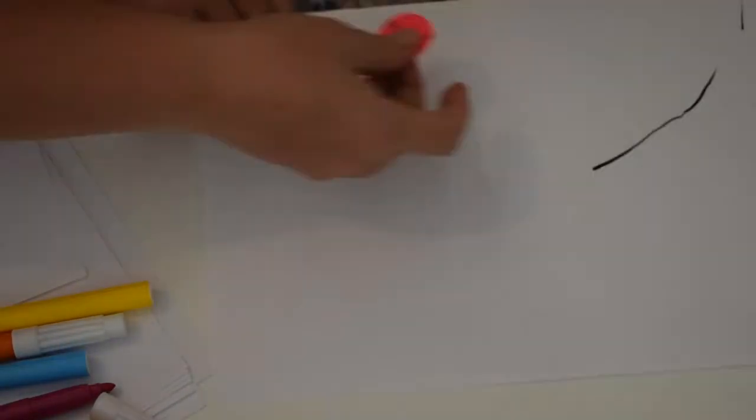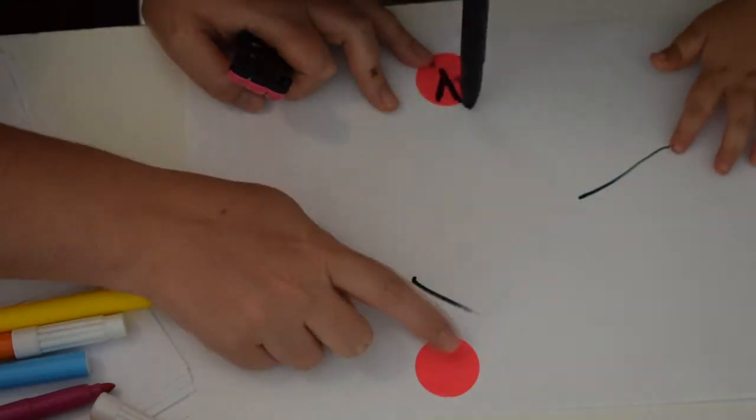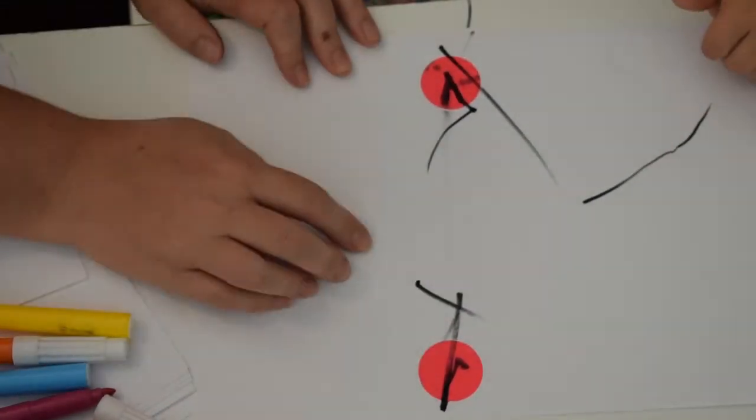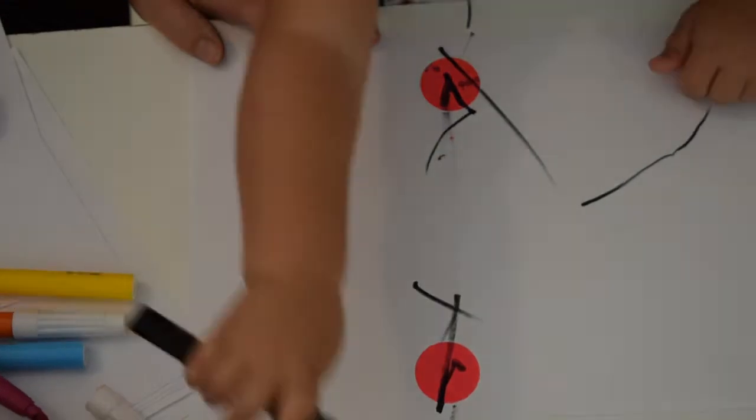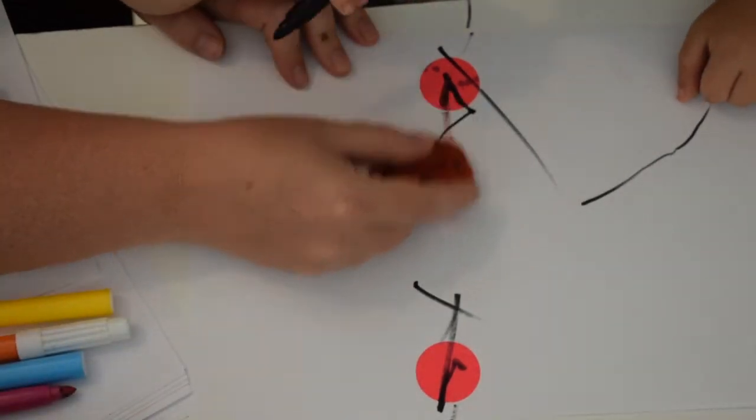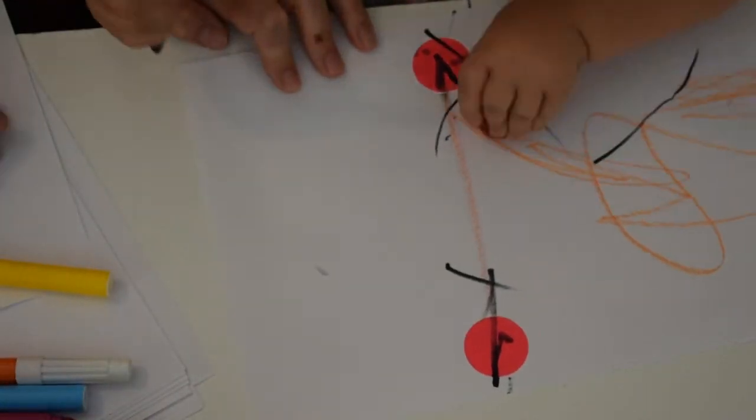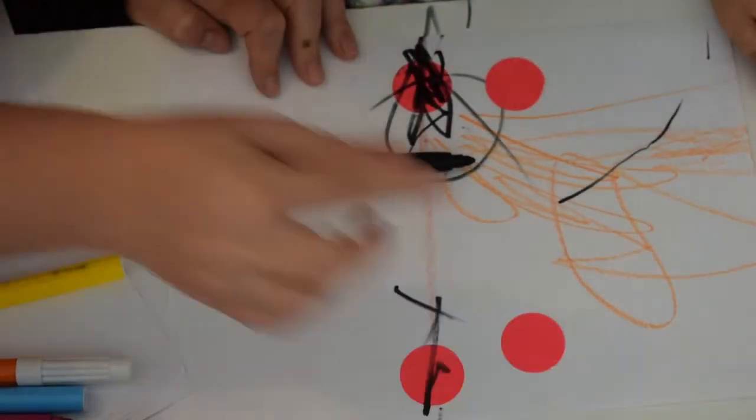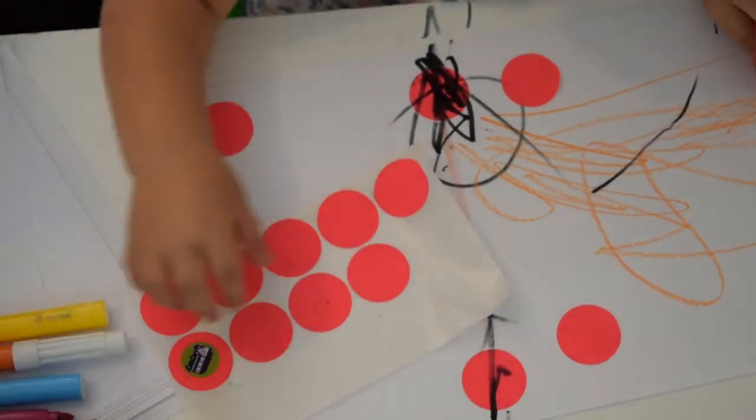You can also practice those vertical lines by sticking two stickers and letting your toddler draw in between them. And you can see this is a little bit harder for a one-year-old, but it's teaching them some control and some intentionality behind their drawing, which is really great for this age.